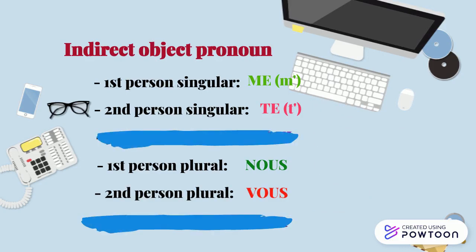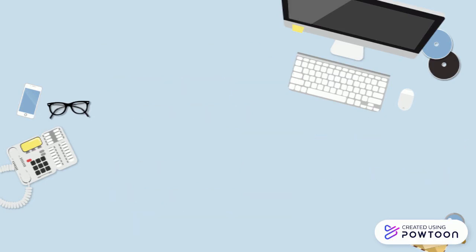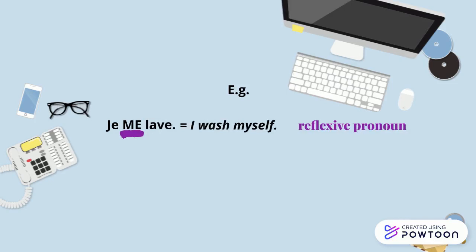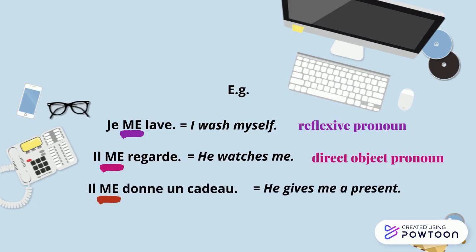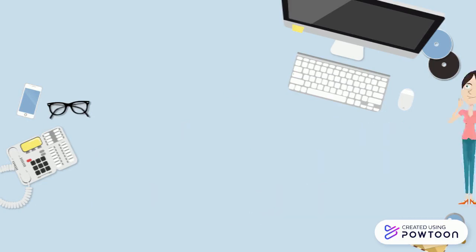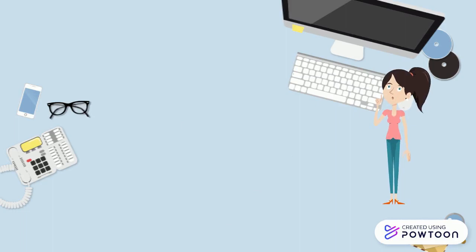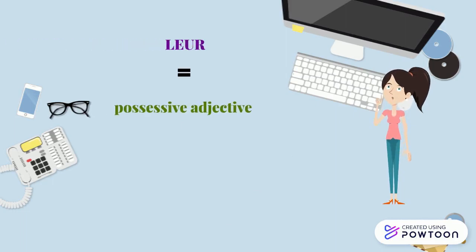Except at the third person plural, the indirect object pronoun is the same as the direct object pronoun and the reflexive pronoun. For instance, 'je me lave' — I wash myself — me is a reflexive pronoun. 'Il me regarde' — he watches me — me is a direct object pronoun. 'Il me donne un cadeau' — he gives me a present — me is an indirect object pronoun. The indirect object pronoun at the third person plural, leur, is identical to the possessive adjective singular.